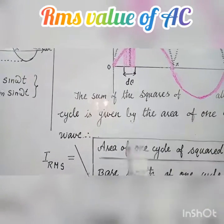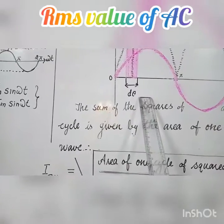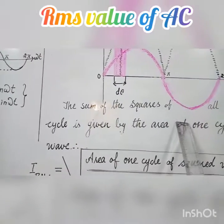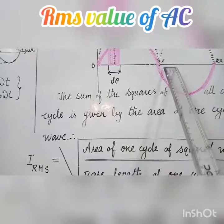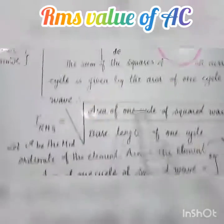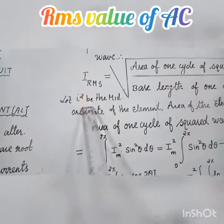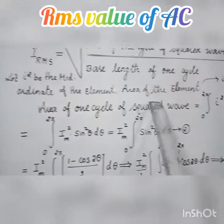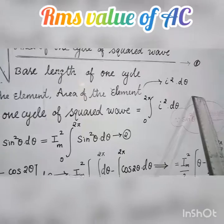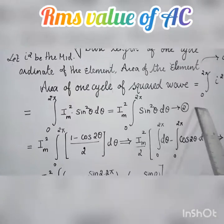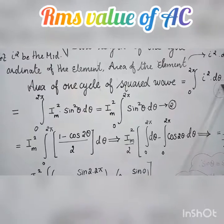Consider the first half cycle of the squared current waveform shown in the figure, and again the second half cycle, taking one more elementary element. Let I² be the mid-ordinate of the element. The area of the element is I² × dθ. Therefore, the area of one cycle of the squared waveform equals the integral of I² dθ.